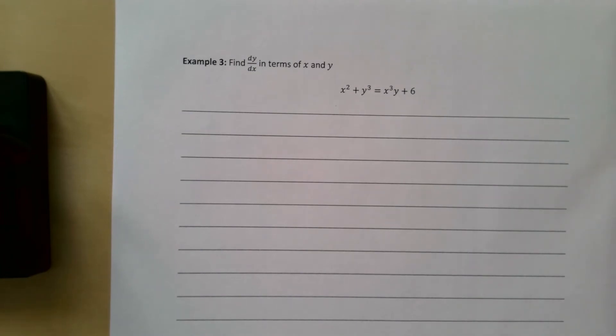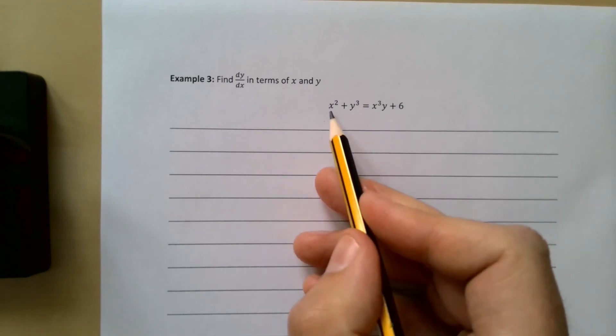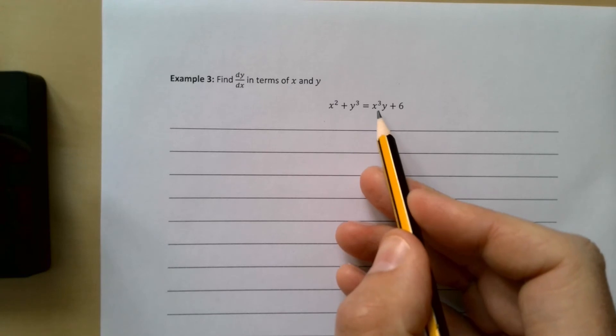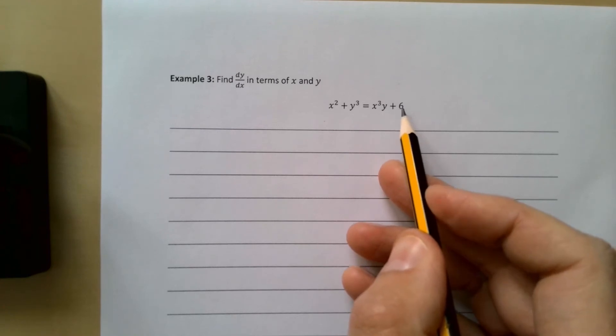Final example: find dy/dx in terms of x and y. This is 2x, this is 3y² dy/dx. This here is a problem—it's going to be a product rule. We'll deal with that bit separately, and the 6 bit is just going to disappear.